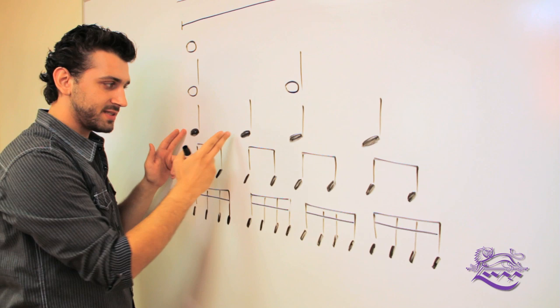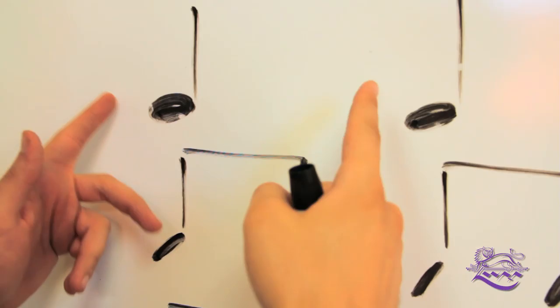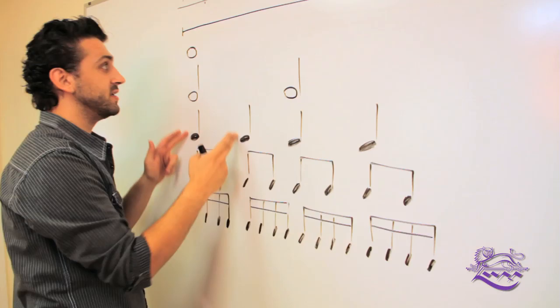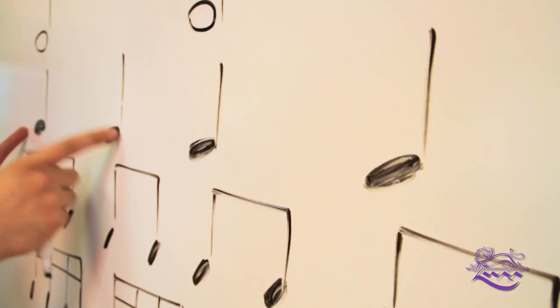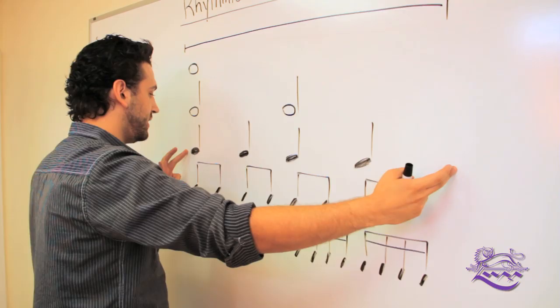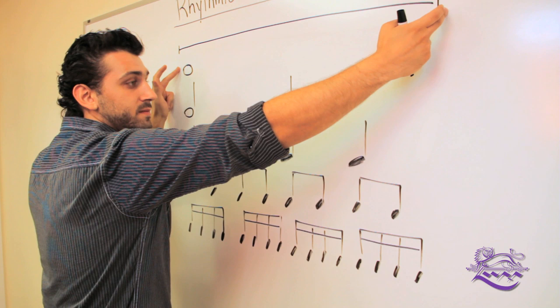The quarter note works exactly the same way. Just like its name, the quarter note has one quarter the duration of the whole note and half of the duration of the half note, which means you will need one, two, three, four quarter notes to cover the duration of two half notes or of one whole note.